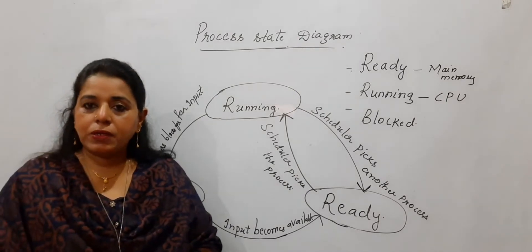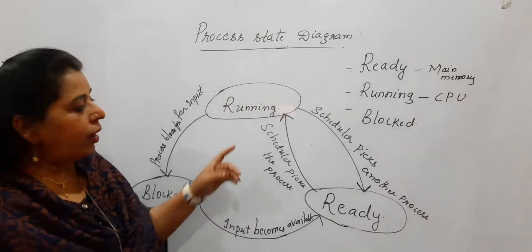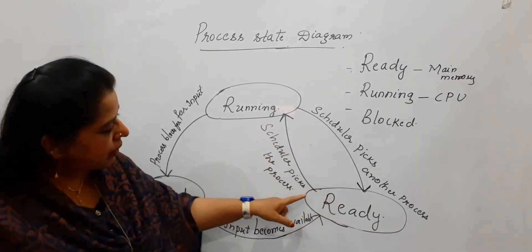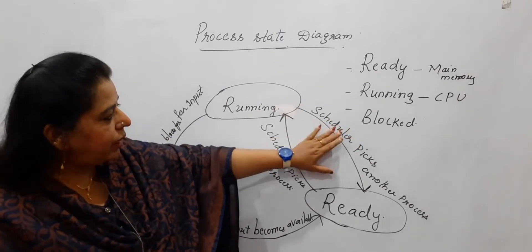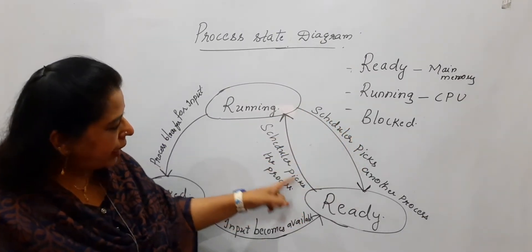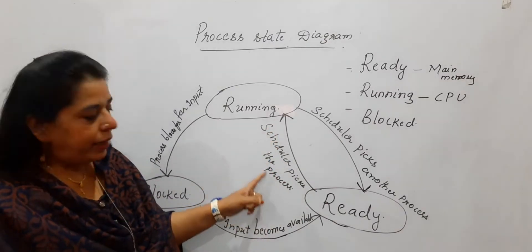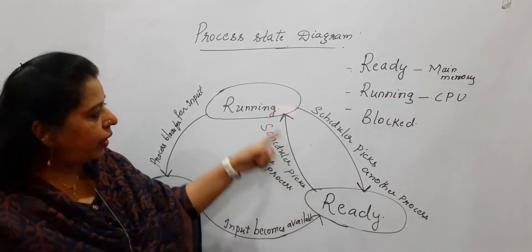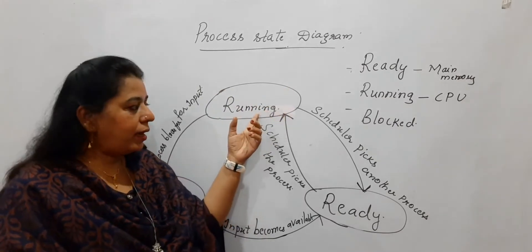When the CPU is allocated to a process for execution, it becomes in the running state. For running, always remember it is the CPU. The scheduler takes from the main memory and allocates to the CPU for execution so that it becomes in the running state.